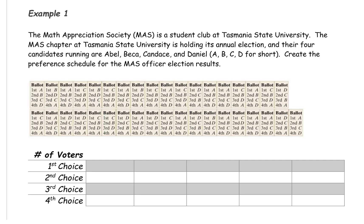The MAS chapter at Tasmania State University is holding its annual election, and there are four candidates running: Abel, Becca, Candace, and Daniel. We'll call them A, B, C, and D for short.